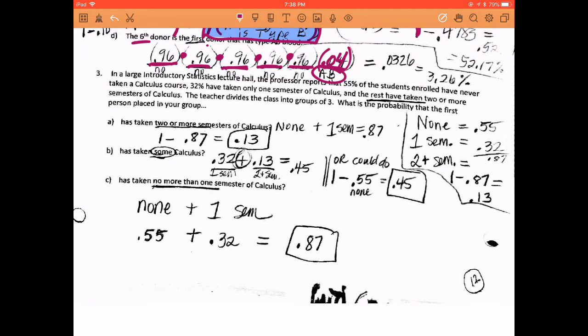Alright. So now we are talking about a lecture hall of statistics students. We have defined for us that the probability that the person has taken no calculus classes is 0.55, and 32% of the class have taken one semester of calculus. So I added those two together to get 87%. That then told me the rest of them are the two plus semesters of calculus. If the no semesters plus the one semester is 87%, then the two or more semesters is the rest of that, which is 13%.